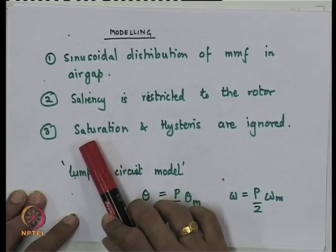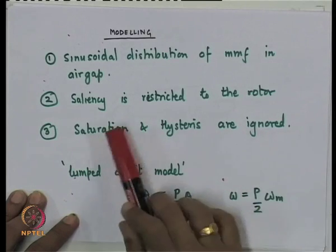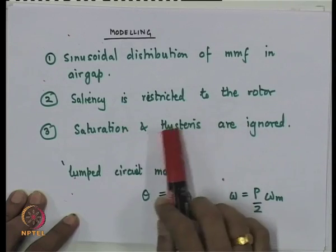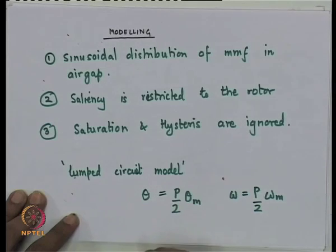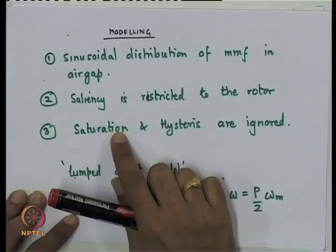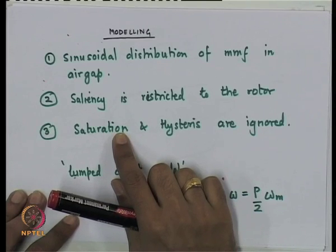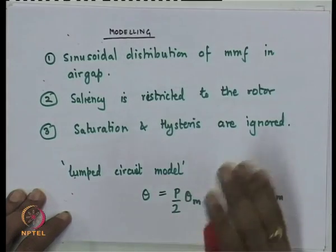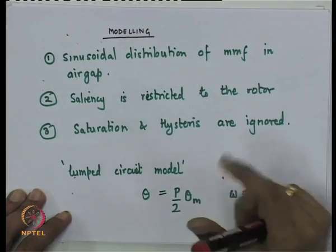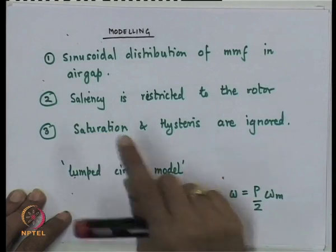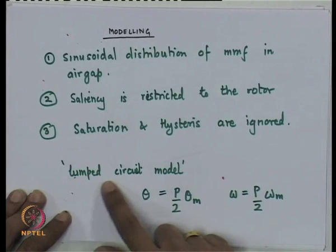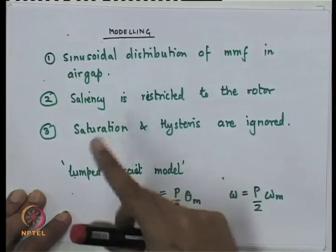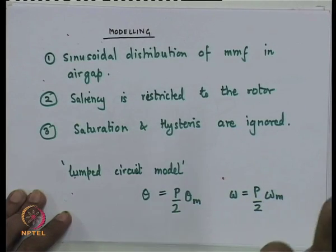Another very important assumption is that saturation and hysteresis are neglected, so we treat the machine as a linear magnetic circuit. This simplifies analysis greatly. At some point we may need to relax the saturation assumption for realistic answers, and we will add corrections for saturation to the basic model. Our lumped circuit model will not include parasitic capacitances or winding capacitances, so it is effectively restricted to relatively slow transients.